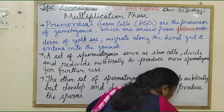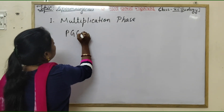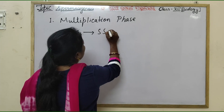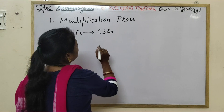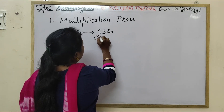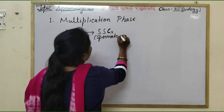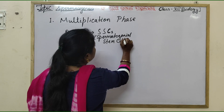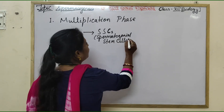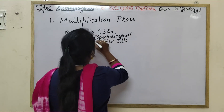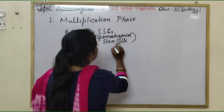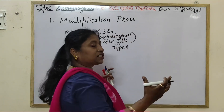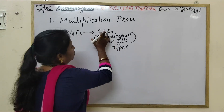The primordial germ cells divide into SSCs — spermatogonial stem cells. These spermatogonial stem cells are generally called Type A spermatogonia. In higher classes you will use terms like Type A, lengthen, or intermediate spermatogonia. These are also known by a second classification.